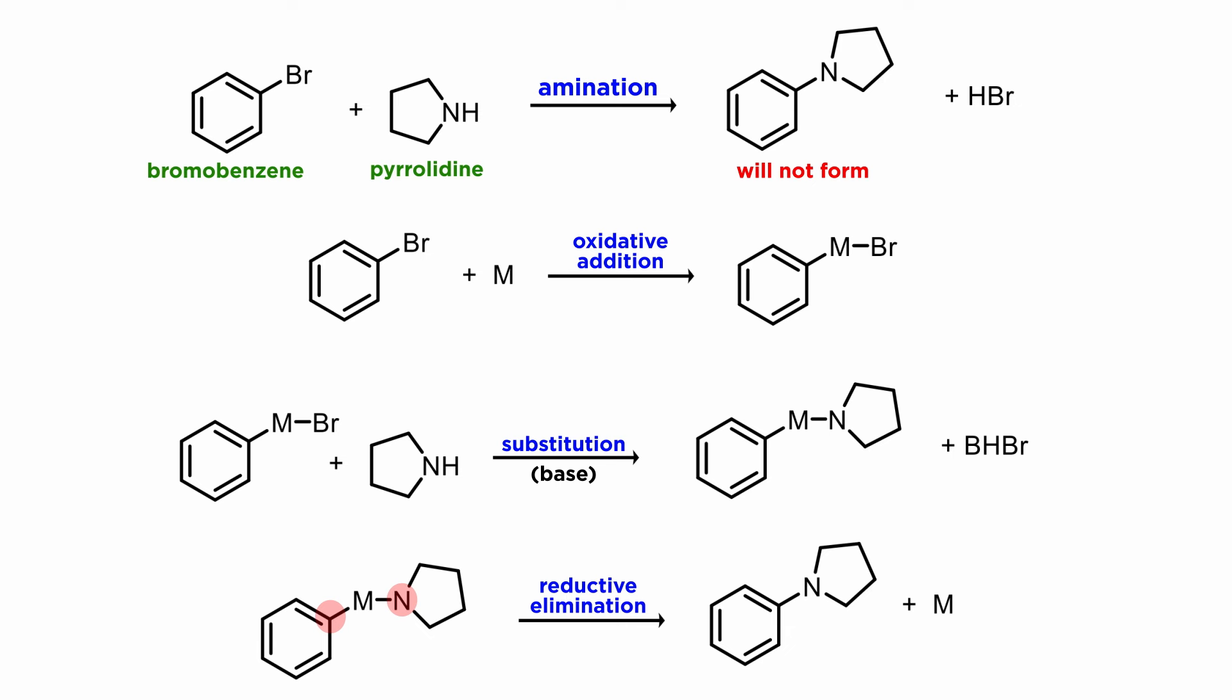Finally, if this works, we can hope that there will be a reductive elimination, forming the key C-N bond yielding the desired amination product, and releasing the metal complex to carry out another cycle. If all of this works and we find the perfect metal complex to catalyze the reaction, we will have solved this problem.